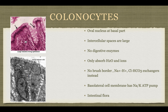Colonocytes have an oval nucleus and quite large intercellular spaces. There are no digestive enzymes, because their role is only absorption. They have ion exchangers rather than a brush border, and the basolateral cell membrane has the sodium-potassium ATPase pump. The large spaces between the colonocytes house the gut microbiota.